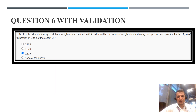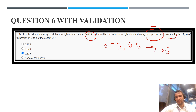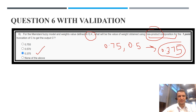Question number 6: for the fuzzy model defined in question 4, what will be the weight obtained using max-product composition? The values are 0.75 and 0.5. Using max-product, we first multiply these two values: 0.75 × 0.5 = 0.375. Then we take the maximum — since there is only a single value, 0.375 is the final answer. Option C is correct.